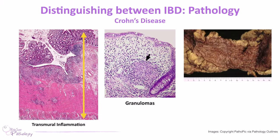Granulomas in the bowel wall are indicative and diagnostic of Crohn's disease when examining a biopsy under the microscope. Another important feature is the cobblestone pattern, which you can see in this colonic resection image. There are areas of the bowel wall that are affected, with clear demarcation to unaffected areas, and then another affected area — we call these skip lesions. This cobblestoning and skip lesion pattern can often be seen on radiology. The key pathological features of Crohn's disease are transmural inflammation, granulomas, and skip lesions or cobblestoning.